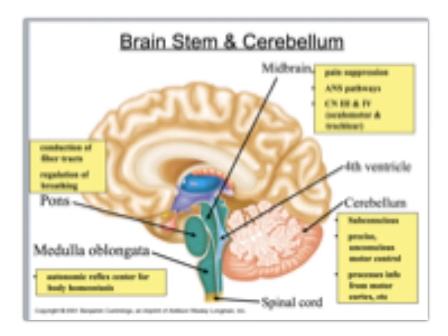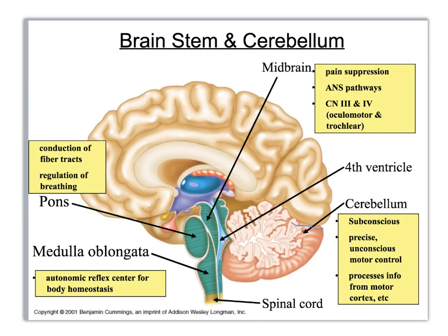Let's do the cerebellum first because it's just one thing. Right here is the cerebellum. What does it do? Some conscious precise motor control — it processes information for the motor cortex.